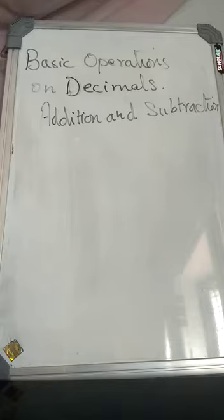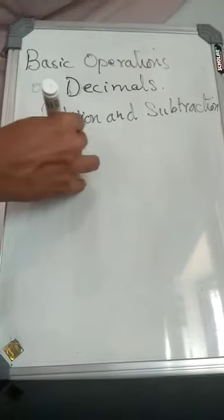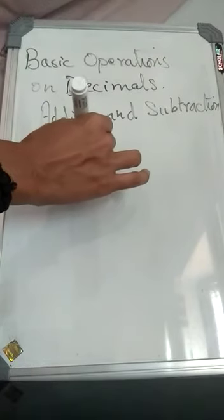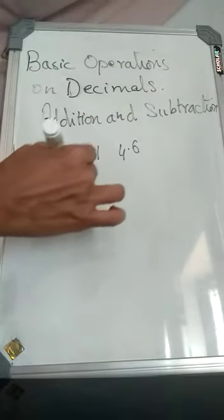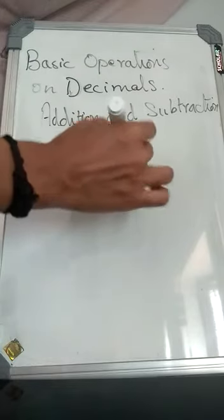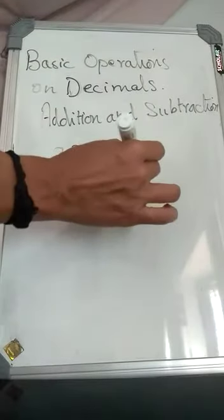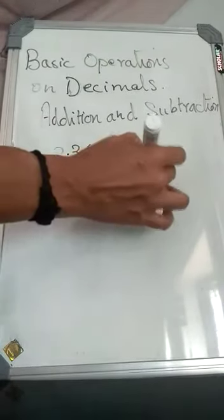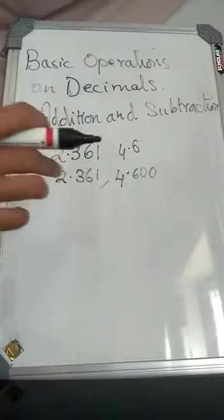For adding or subtracting decimal numbers, convert them into like decimals — add zeros at the end if necessary in order to convert them into like decimals. For example, if you are given two decimals and asked to add them, you will make them into like decimals. Like decimals means they have the same number of decimal places. If one has three decimal places, you convert the other into three decimal places by adding a zero. It doesn't change its value. Now both are like decimals, then you will add them.